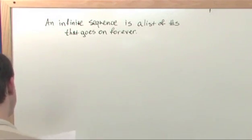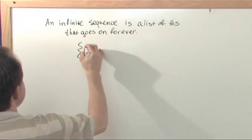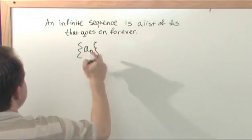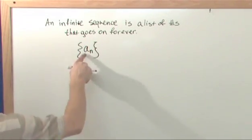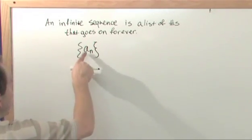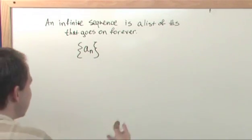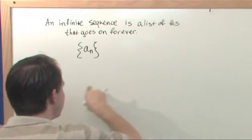So the way that you write it in compact form is like this. Each element of the sequence is going to be written as a sub n. Don't get scared off by this notation. All it means is that it's a number. We call it a. n sub n just means it's the nth term. So it's a list of numbers.